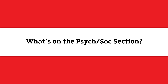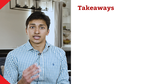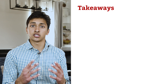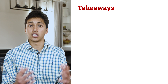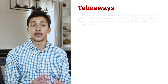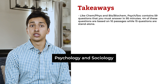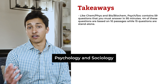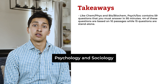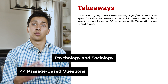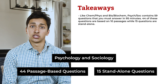What's actually on the psych-soc section of the MCAT? The MCAT psychology and sociology section will test your knowledge of key concepts in the fields of psychology and sociology. Like chem-phys and bio-biochem, psych-soc contains 59 questions that you must answer in 95 minutes. 44 of these questions are based on 10 passages, while 15 questions are standalone.